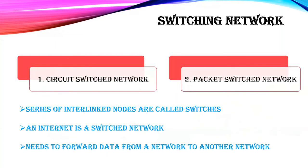Next is switching network, which is divided into two types: circuit switched network and packet switched network. Simply put, the internet is called a switching network. Here, switches act as hubs to connect different devices, where a central hub connects different LANs. In a switching network, the hub accesses several switches connecting several devices together.